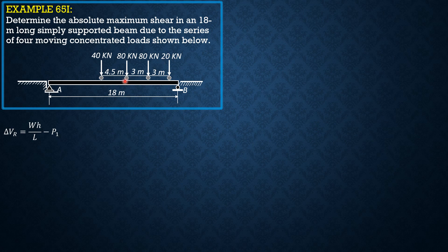W would be the loads remaining on the span, and that is 80 plus 80 plus 20 because this 80 kilonewton load will be over A and the 40 kilonewton load will be over the ground. So 80 plus 80 is 160, plus 20 is 180. So equals 180 times 4.5 over 18 minus 40.